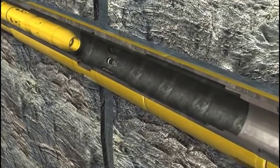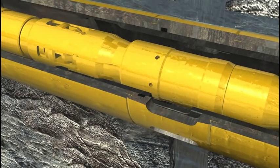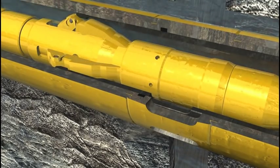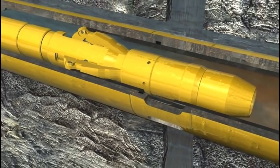Once the ball seat is drilled out, a shifting tool can be run in on either wire line or coiled tubing, and the sleeve can be shifted closed and reopened if needed.